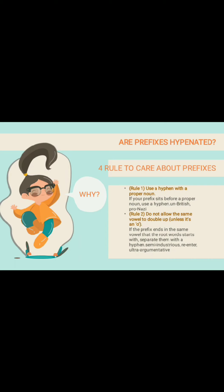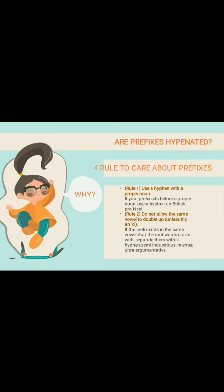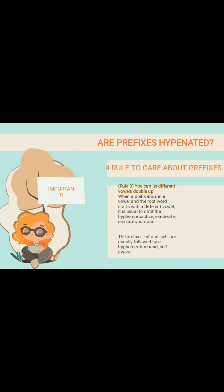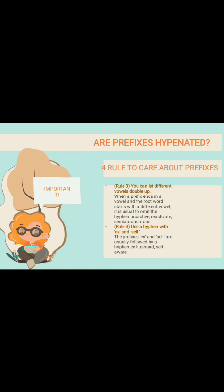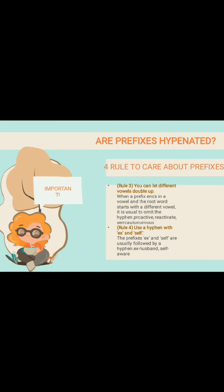Rule 2: Don't allow the same vowel to double up. If the prefix ends in the same vowel that the root word starts with, separate them with a hyphen — for example, semi-industrious, re-enter, ultra-argumentative. Rule 3: You can let different vowels double up. When a prefix ends in a vowel and the root word starts with a different vowel, it's usual to omit the hyphen — for example, proactive, reactive, semi-autonomous. Rule 4: Use a hyphen with 'ex' and 'self'. The prefixes 'ex' and 'self' are usually followed by a hyphen — for example, ex-husband, self-aware.